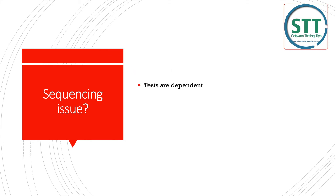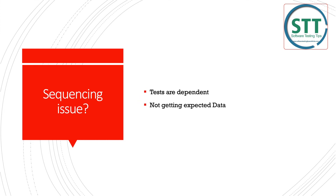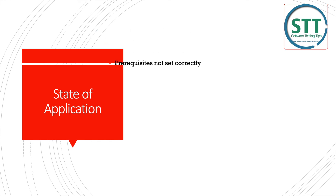Sequencing issues are another cause. Sometimes tests are dependent on each other — if you move a test up or down, it fails. For example, one test case creates a user and the second test case uses that user. If the first test case fails, the second will always fail too. You need to identify and manage these test dependencies.